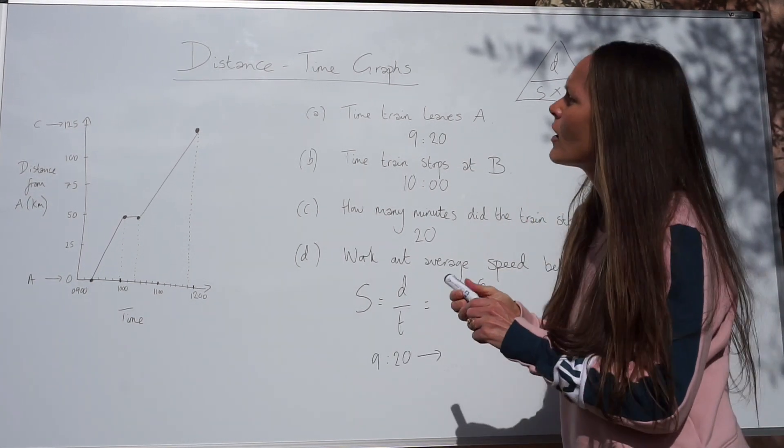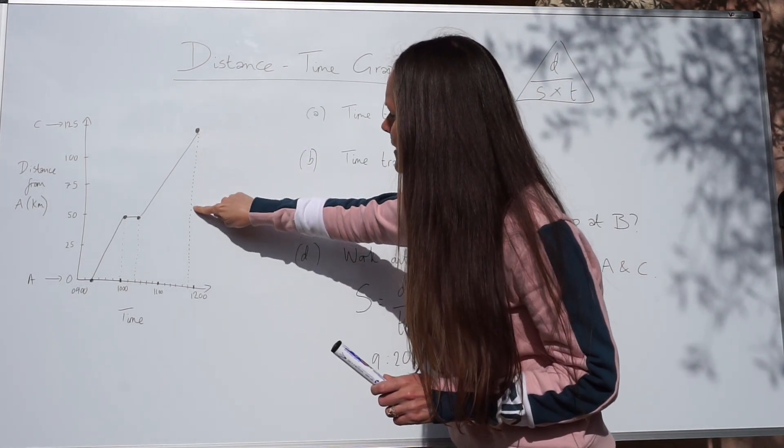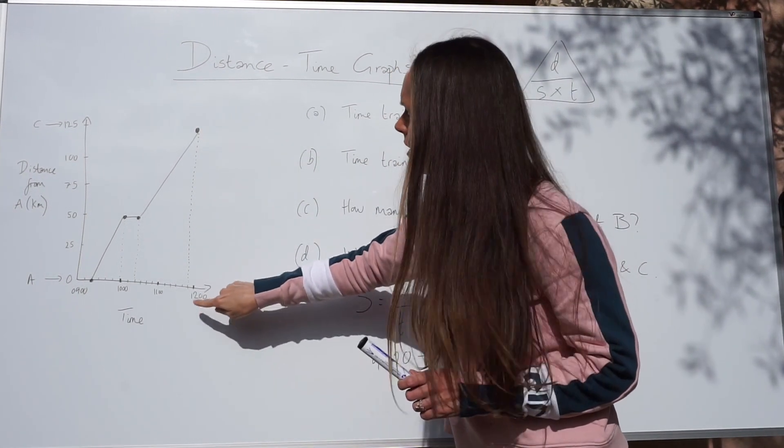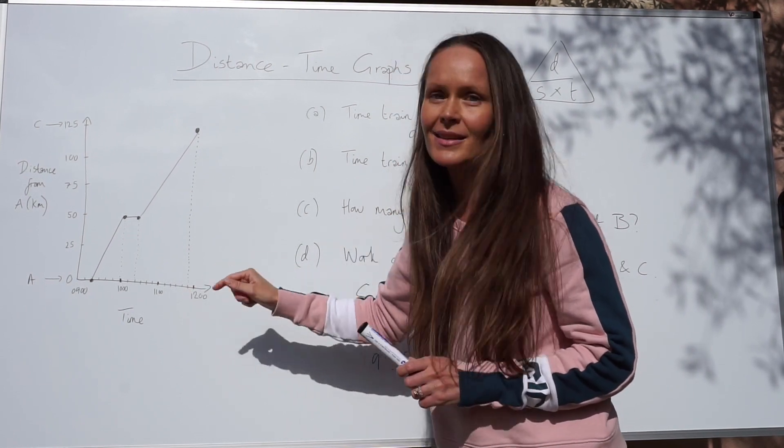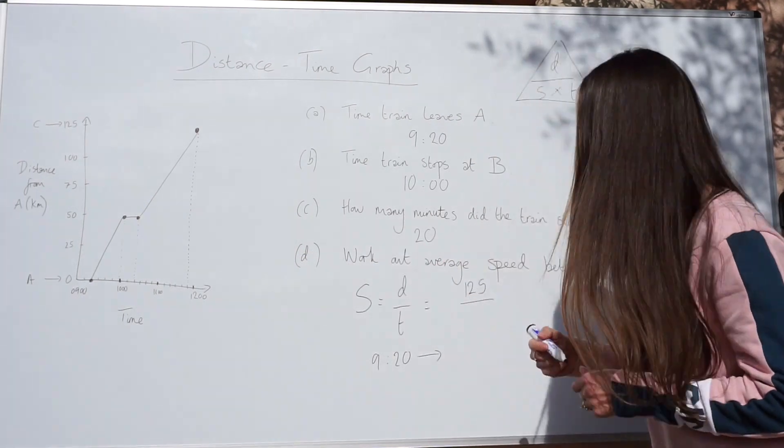And if we look at the graph here, we can see it arrived at C at 11.50, because it's one little square before 12 o'clock and each little square is 10 minutes. So 10 minutes before 12 is 11.50.